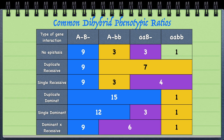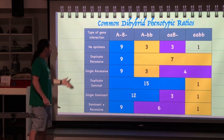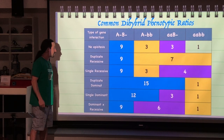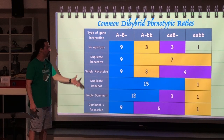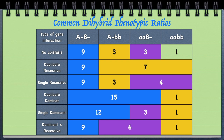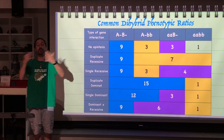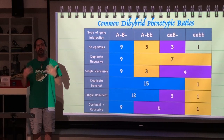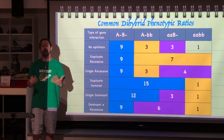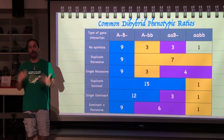But with epistasis, that's not exactly what we see. We can see a 9:7 ratio, or a 9:3:4 ratio — which is actually what we see with the Labradors. You could also have a duplicate dominant with a 15:1 ratio, a single dominant 12:3:1, or a dominant recessive 9:6:1. We're going to look at how these different gene interactions produce these ratios.